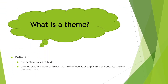The first thing we need to think of is what is a theme. A theme can be defined as the central issues in a text. Themes usually relate to issues that are universal or applicable to contexts beyond the text itself. This is what allows us years later to still study the same texts — for instance, we have been studying Shakespeare's work for over 400 years because his themes are still applicable to us today.